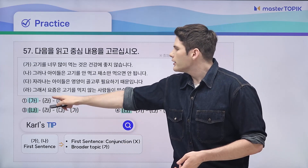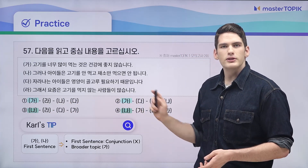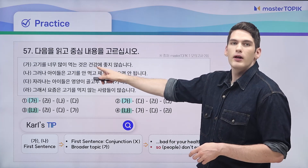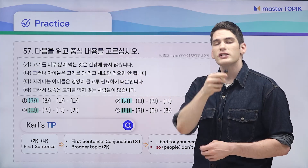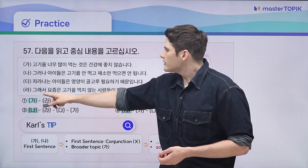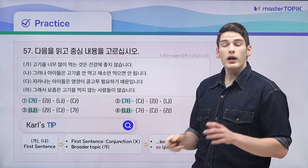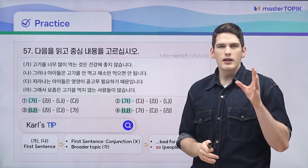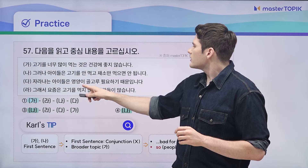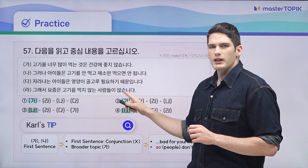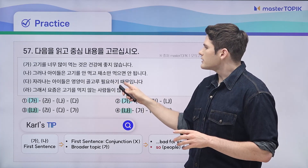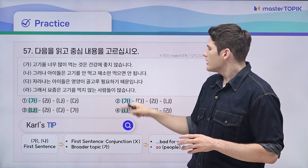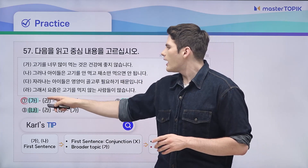So we've got it down to either one or two. Now we're going to look at 다 and 라 as our next two options. 다: 그래서 요즘은 고기를 먹지 않는 사람들이 많습니다. So these two kind of go together — it's bad for your health, so people don't eat it. And 라: 자라나는 아이들은 영양이 골고루 필요하기 때문입니다. This is explaining a reason. These two also go together, so we know the order is going to be 가, 라, 나, 다.